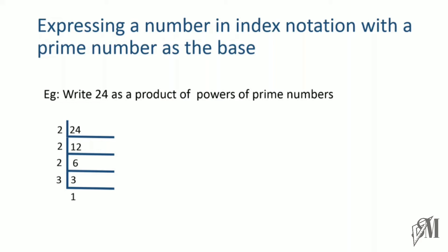The division section is now over. Now we write 24 as a product of prime numbers: 24 is equal to 2 into 2 into 2 into 3. This set of prime numbers is taken from the dividers in the division section, and that gives you, when written as a product of powers, 2 to the power 3 into 3 to the power 1. So we have written 24 as a product of powers of prime numbers using 2 and 3.